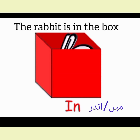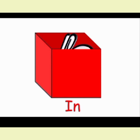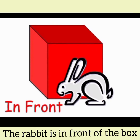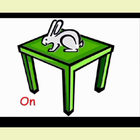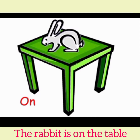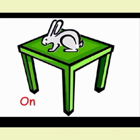Next: in. The rabbit is in the box — aap ko rabbit toh nazar nahi aa raha, sirf uske lambe kaan, isliye isko kharkosh kehte hain na. The rabbit is in the box. Next: in front of. The rabbit is in front of the box — when something is in this position, you use 'in front of.' Next: on. The rabbit is on the table — table ke oopar betha hoa hai. Physically jab kuch cheez kis cheez ke oopar ho, we use 'on.'